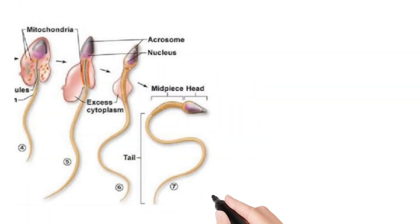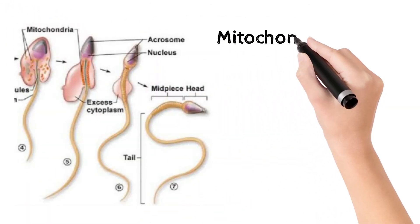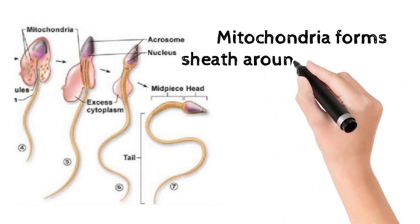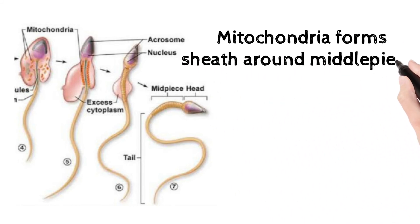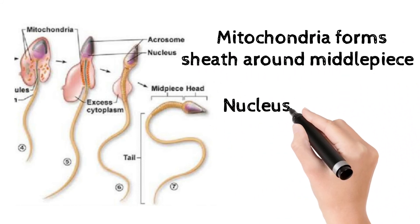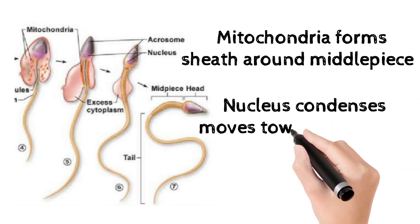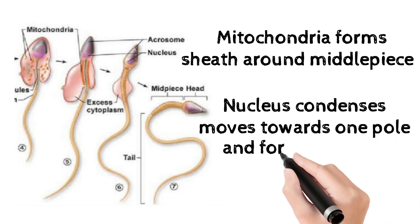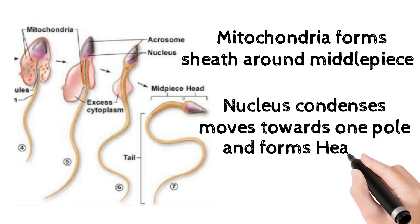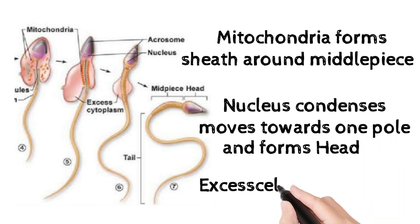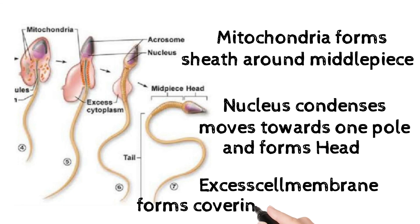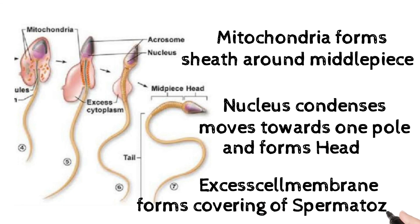The nucleus condenses and moves to one pole, forming the head. Excess cell membrane forms the covering of the spermatozoa. Thank you. If you liked this video, make sure to subscribe for more.